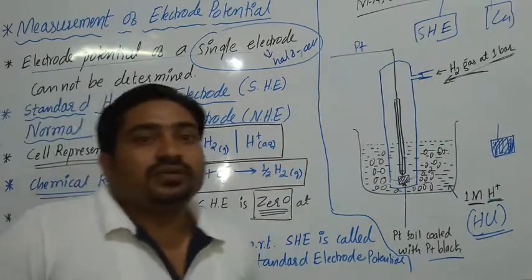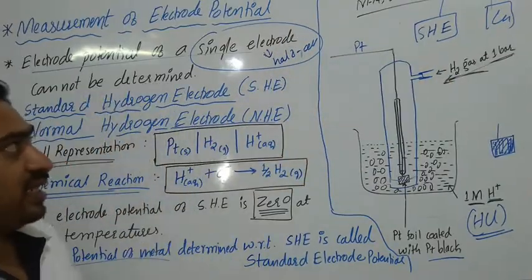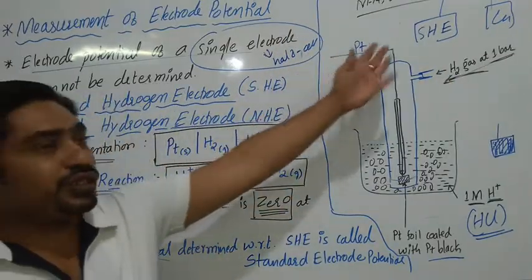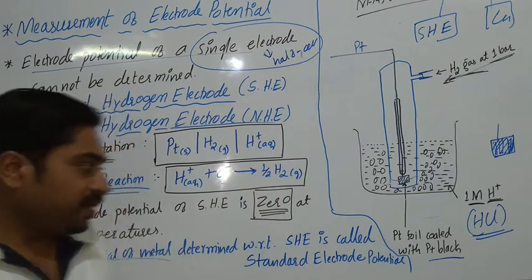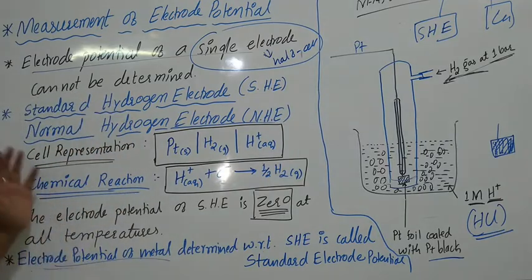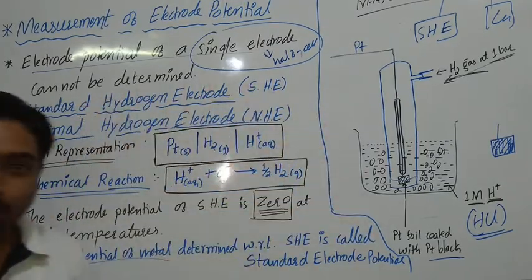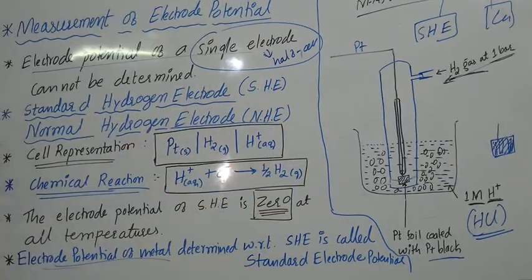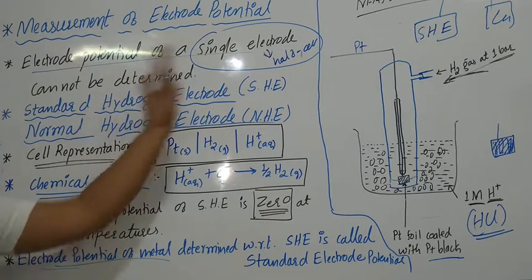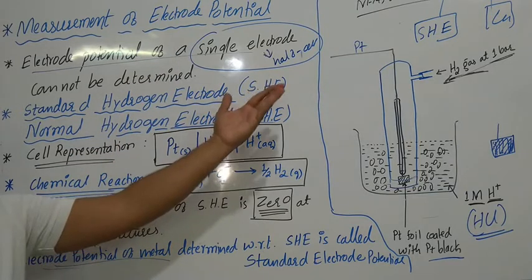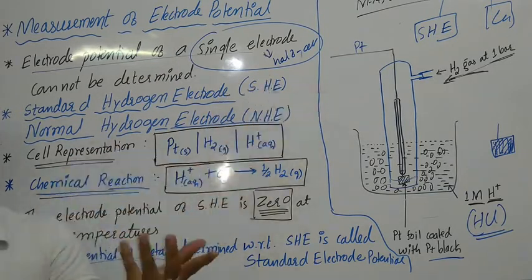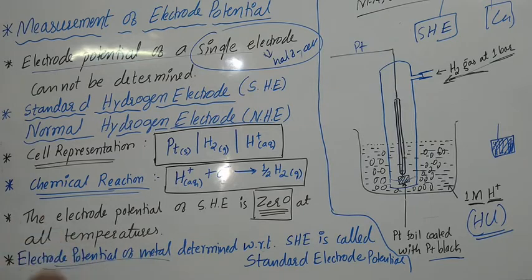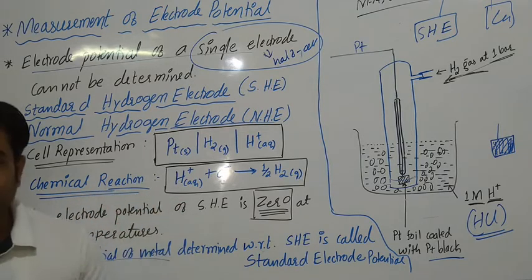We can then measure the electrode potential of the copper electrode easily. How to calculate the electrode potential of copper, zinc, and other electrodes will be discussed in the next session.